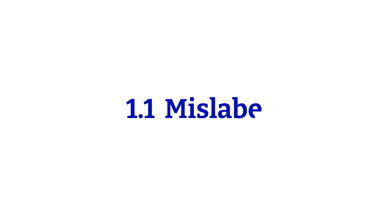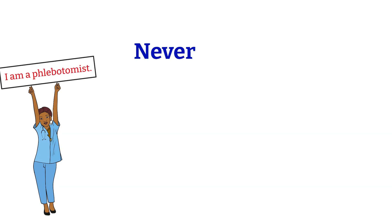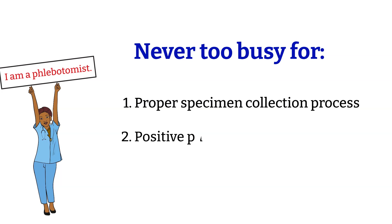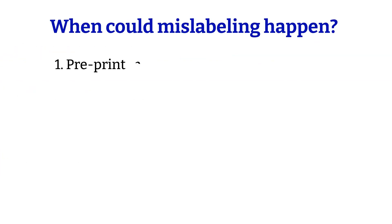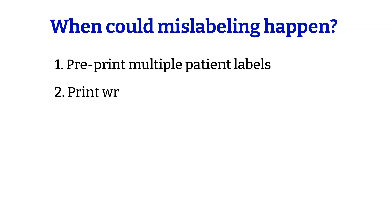These examples show how important our phlebotomists are. It is extremely important to follow the proper specimen collections, positive patient identifications, and labeling process. The processes are there for reasons — I have videos about specimen collections and blood draws, check them out at the end of the video. Mislabeling could happen when the phlebotomist pre-prints patient labels and switches them when labeling the tubes, or prints the wrong label. Once the tube is labeled and sent to the laboratory, it is really hard for CLS to know if the tube was labeled correctly or not.